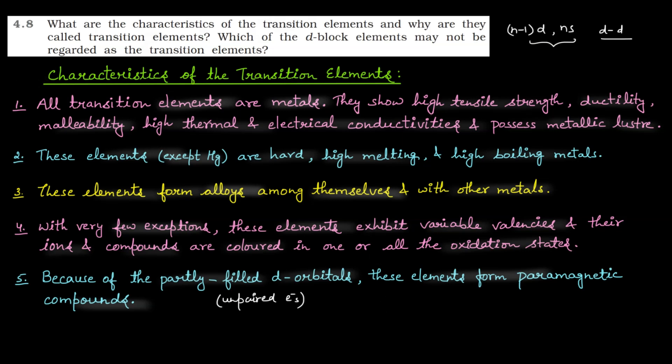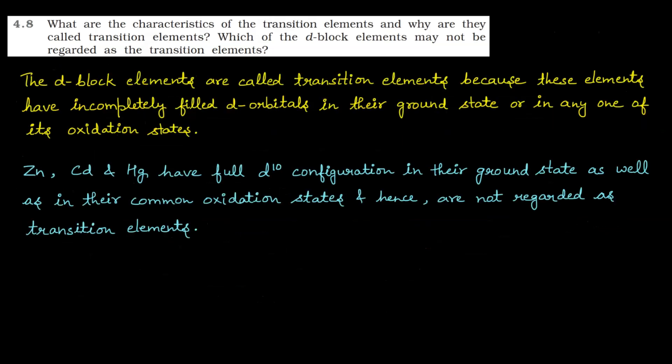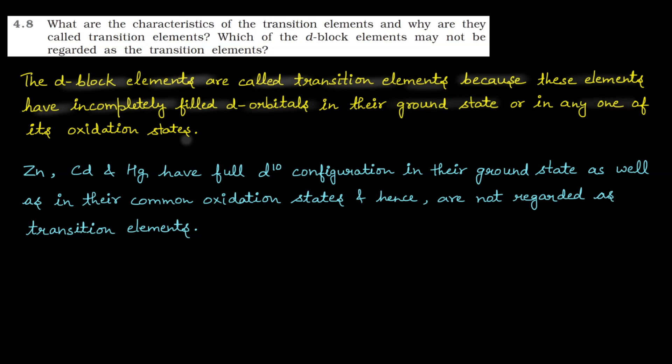Then, why are they called transition elements? The d-block elements are called transition elements because these elements have incompletely filled d orbitals in their ground state or in any one of its oxidation state. These elements which have d orbitals incompletely filled in ground state or in any common oxidation state, we will say that it is a transition element.